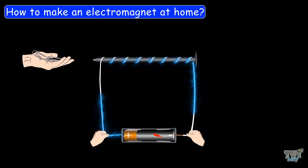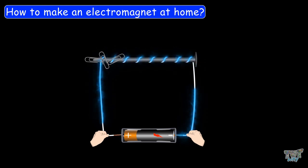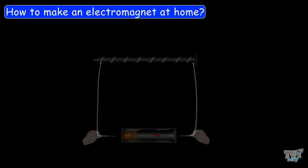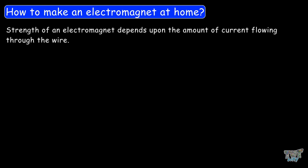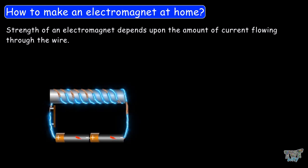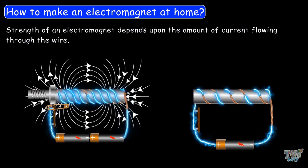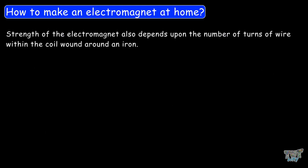Now bring some paper clips closer to the iron nail. You will see that the iron nail attracts the paper clips. This is because of the electricity flowing in the wire, which passes into the iron nail, making it magnetic. When you disconnect the battery, the circuit becomes incomplete and the current stops flowing through the wire. The iron nail behaves like a magnet and produces a magnetic field around it as long as the current flows in the circuit. As we discussed, the strength of an electromagnet depends upon the amount of current flowing through the wire — if we increase the current by changing the battery, the strength increases.